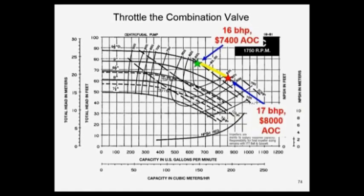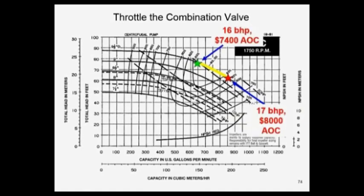Did I save any money? A little bit. At six cents a kilowatt running constantly, I just saved $600 a year, dropped it from 17 brake horsepower back to 16, and I've got design flow. I'm giving the engineer, I'm giving the owner exactly what they asked for. 76 feet of head, 650 GPM, and I've saved $600.